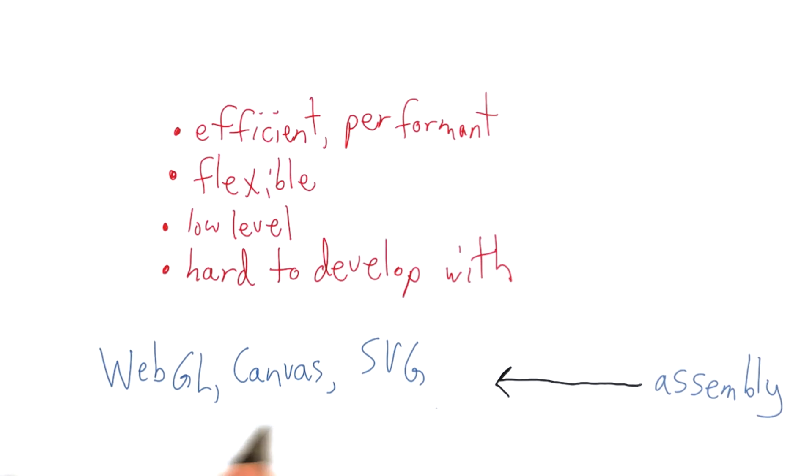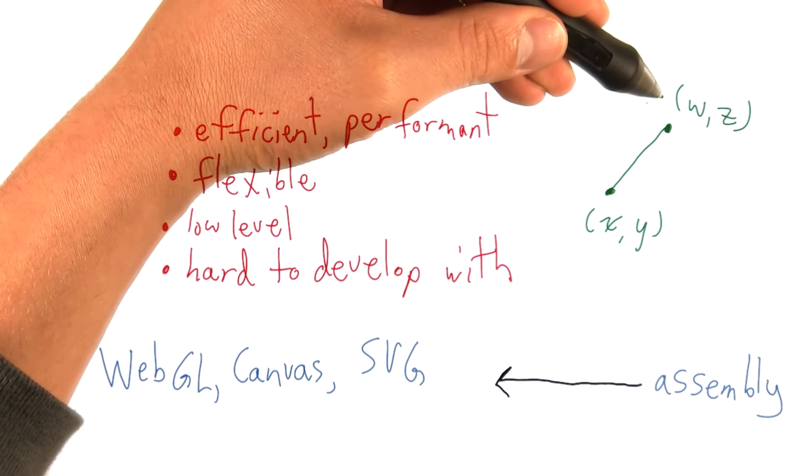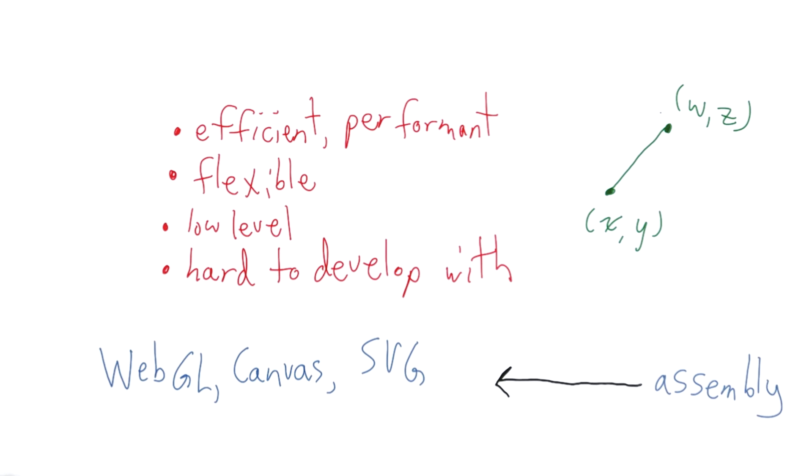At the bottom of this spectrum are low level graphics formats and specifications. These are some of the most efficient, performant, and flexible of your options when choosing to create a visualization, but are very low level and have significant overhead, not only to learn, but to develop in. Think of these as the assembly language of visualizations. While these technologies are very flexible in what you can do, they force you to specify what you want done in terms of pixels and lines. Or rather, place a point at x, y, and create a path to point w, z. This is much like if you're instructing a painter or robot how to draw.